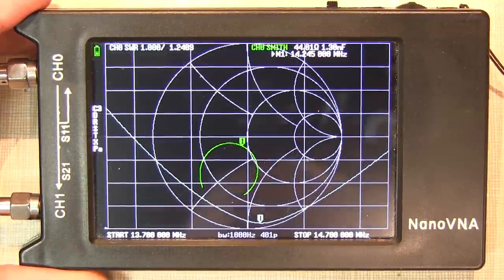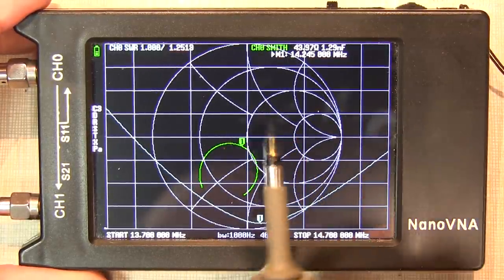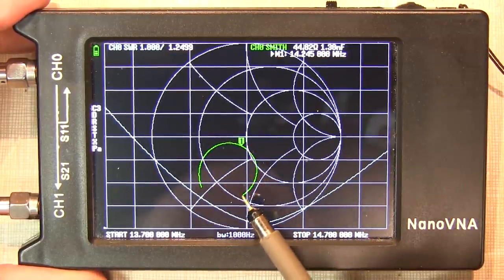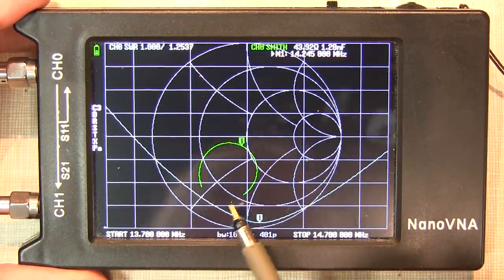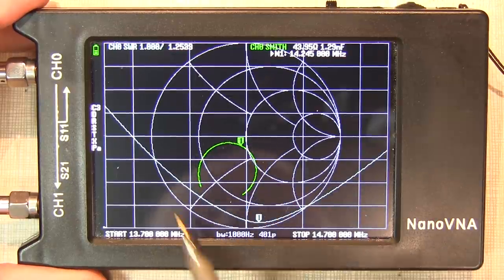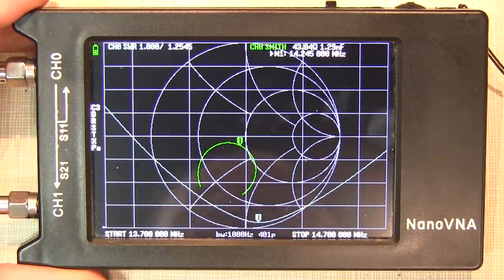Now this is after adding another 36 inch length of coax. And we've rotated our curve a little bit further. Again, you'll notice there's a slight change in the shape of this curve because the line length in terms of number of wavelengths is a little different for each of the frequencies along this curve. But you'll also notice again that the SWR plot really has not changed.